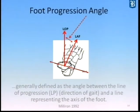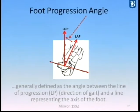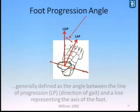The foot progression angle is generally defined as the line between the line of progression — or direction of gait, typically the line of progression of the knee — and a line representing the axis of the foot. You measure that differential, and that's your foot progression angle.